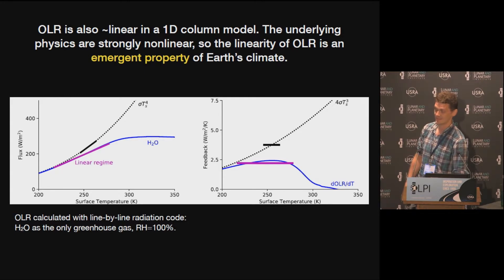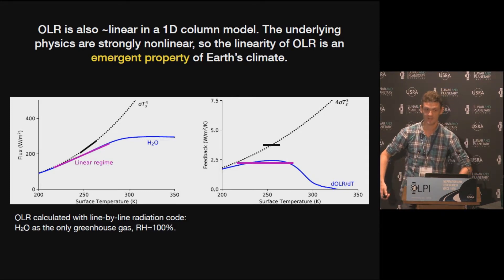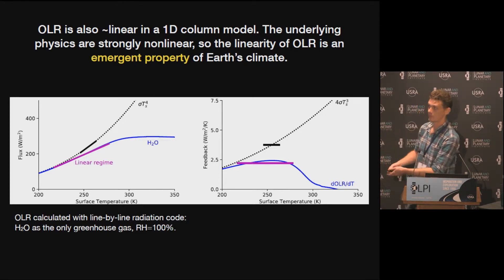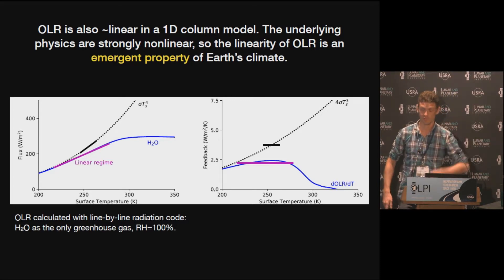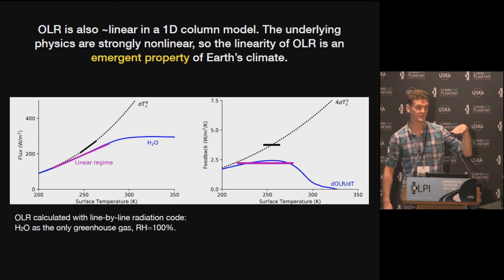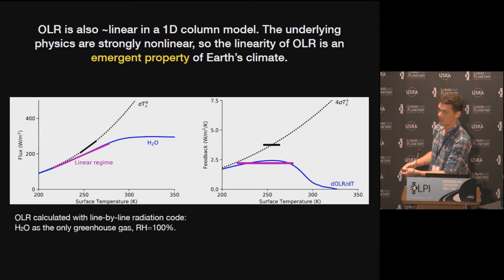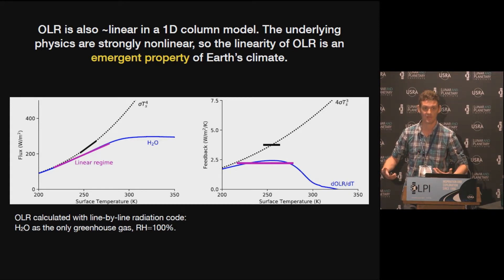I'm showing you here a line-by-line radiation code used to compute Earth's OLR in an idealized model: one bar of nitrogen background atmosphere, H₂O as the only greenhouse gas, kept fixed at 100% relative humidity. At high temperatures we go into the runaway greenhouse, but on the left-hand side leading up to it, the curve looks essentially flat — not curved like a blackbody. The feedback, which is the slope of OLR with temperature, has this purplish bar showing the range where feedback is constant to within ±10%. For a blackbody that range is maybe 10–15 degrees; here you get a whopping 60K or more. Something in this nonlinear system is conspiring to give us linearity — this is emergent behavior.